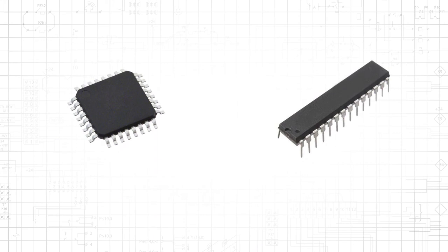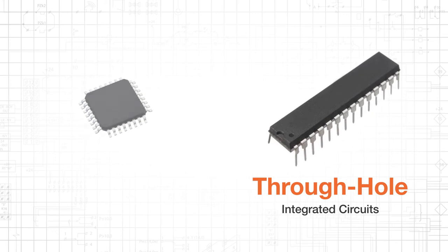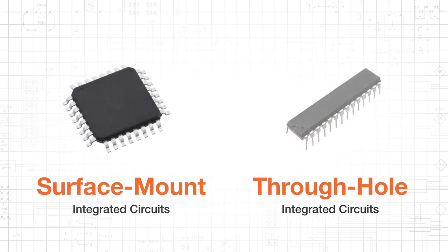Integrated circuits can be divided into two general categories based on their physical structure. Through-hole ICs have longer pins that extend through a PCB and are soldered from the bottom. Surface-mount ICs have shorter pins that do not extend to the other side of the board.